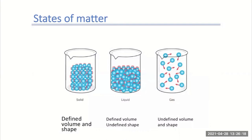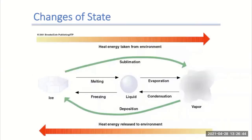Looking at our states of matter — solid, liquid, and gas — solids have defined volumes and shapes. Liquids have defined volumes but undefined shapes. Gases have undefined volumes and undefined shapes. We're going to look a little closer at all these different phase changes going between these different phases.